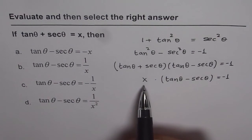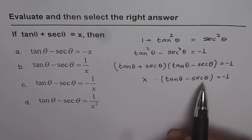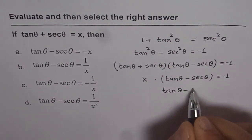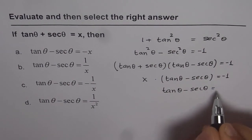Now we know tan theta plus secant theta is x, so we can rewrite this as x times tan theta minus secant theta. And from here, we get our answer, which is tan theta minus secant theta equals to minus of 1 over x.